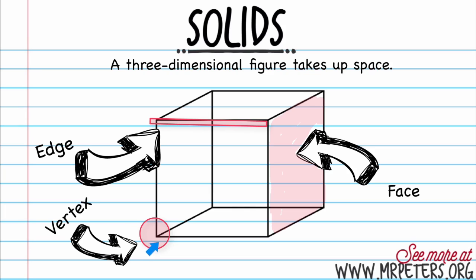The next thing is the vertex, or vertices when referring to more than one. It is the point at which two edges meet. So you can see right here — that is our vertex.